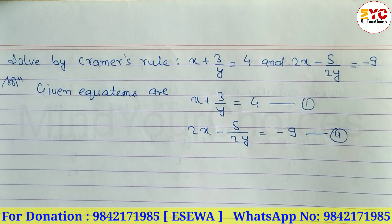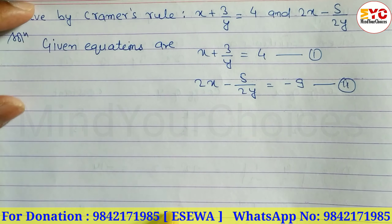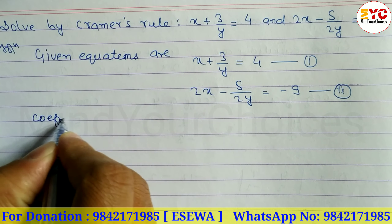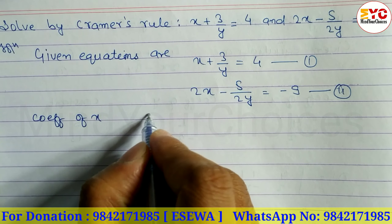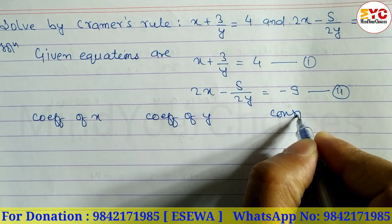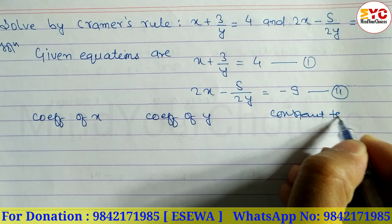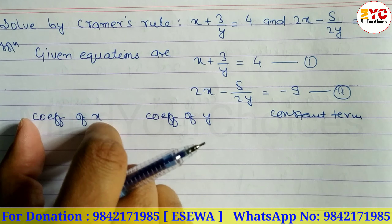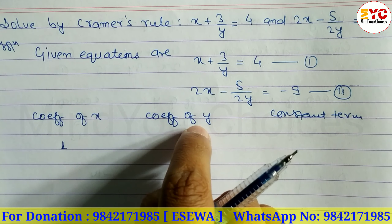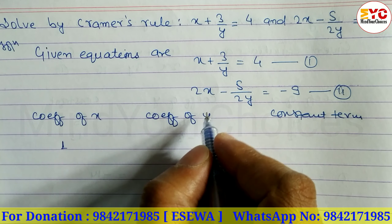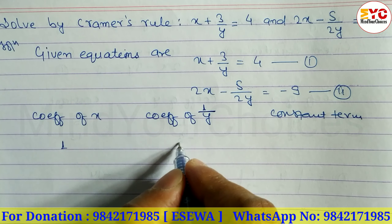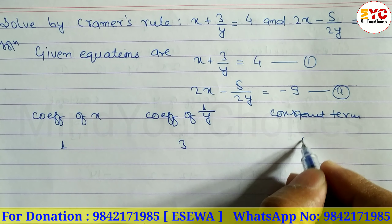Now we identify the coefficient of x, coefficient of y (i.e., 1/y), and the constant term. For Equation 1: coefficient of x is 1, coefficient of 1/y is 3, and the constant number is 4.